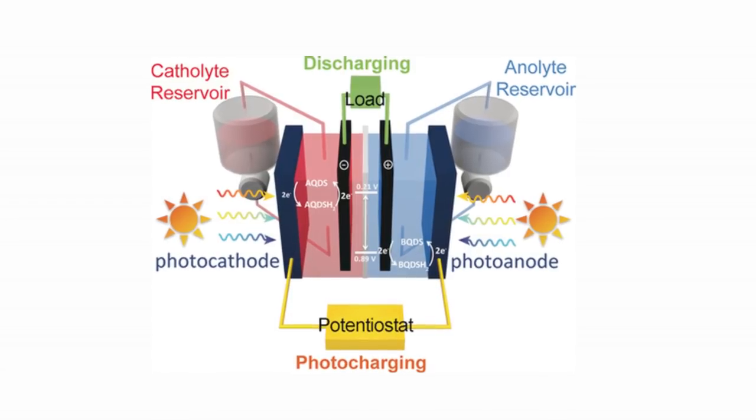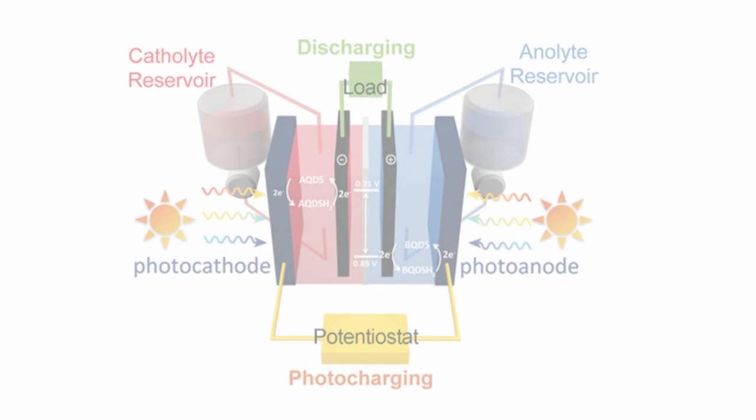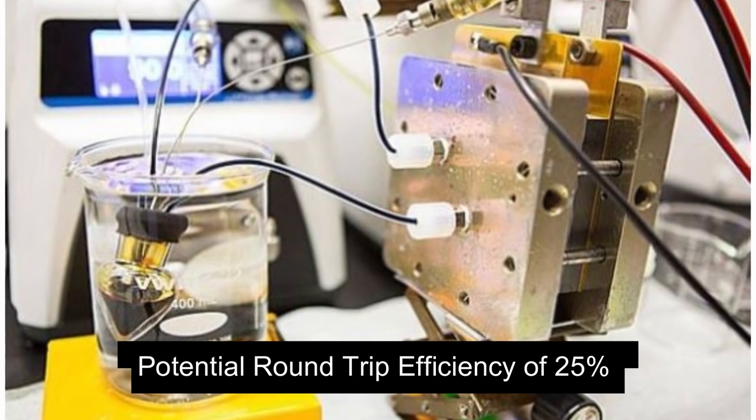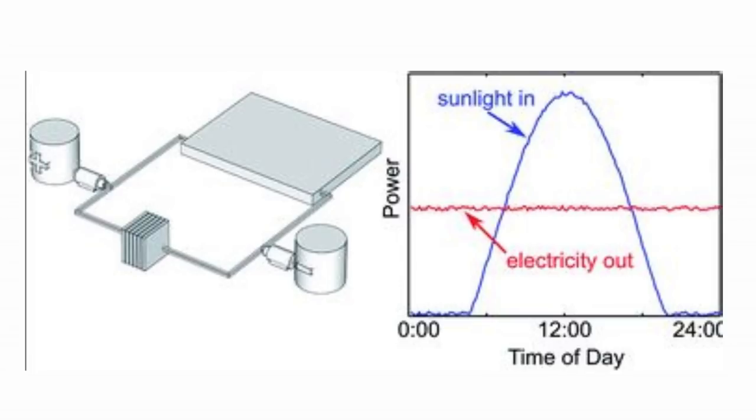Experts in the field suggest that the solar flow battery has the potential to reach 25 percent round-trip efficiency, which would make it a very lucrative option as opposed to just being commercially viable.